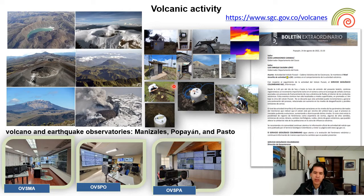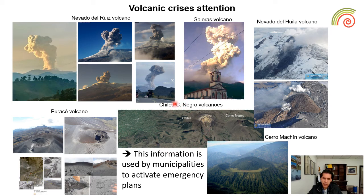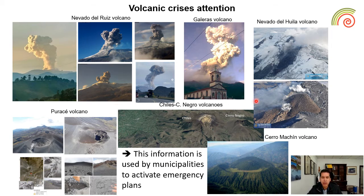With respect to volcanic activity, we currently produce weekly bulletins of activity for active volcanoes in Colombia. We have three observatories around the territory, which monitor more than 25 active volcanoes. With this information, we can provide useful information for municipalities to activate emergency plans. For example, we currently have minor eruptions at Nevado del Ruiz, and we have also dealt with volcanic activity at Nevado del Ruiz and different volcanoes around Colombia's territory.